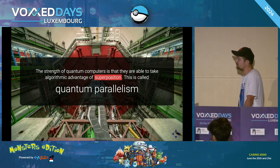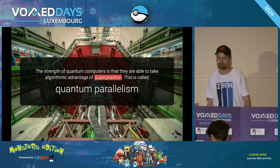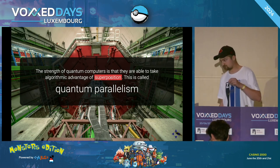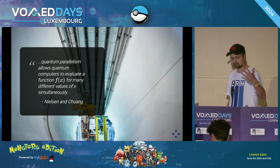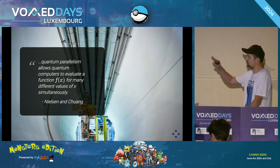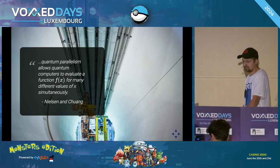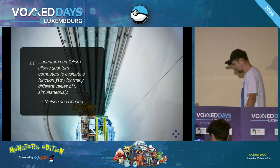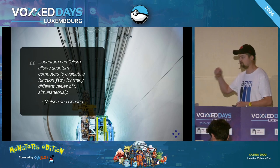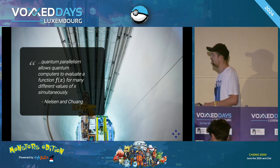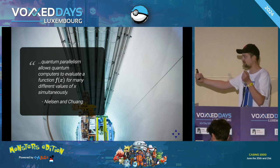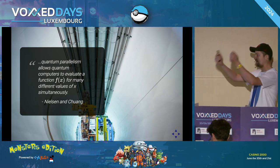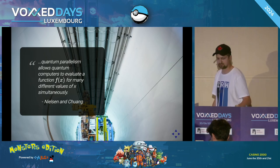This might seem inconsequential, but it's actually very important. The computational strength of quantum computers is that they can take algorithmic advantage of superposition and this interference effect — what we call quantum parallelism. Consider a function f(x): on a classical computer you pass different values of x one at a time. On a quantum computer, in principle, you can create a superposition of all possible values of x and pass that into the function simultaneously — which is fundamentally different.